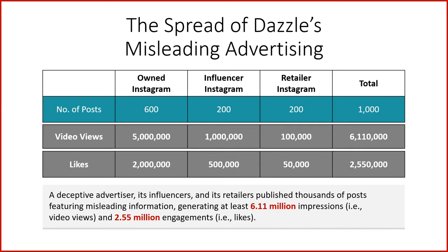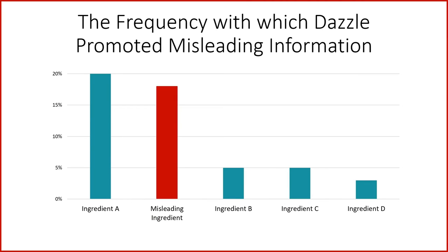Based on this analysis of Dazzle's activity on Instagram, we know that it promoted the misleading ingredient in thousands of posts, and that these posts were seen by millions of people and received millions of likes. We can add more context here. In addition to looking at the absolute number of posts, we analyzed the frequency with which the additional ingredient was mentioned compared to four other ingredients in Dazzle's product. The misleading ingredient, highlighted in red, was promoted in 18% of all of Dazzle's posts, which was much higher than three of the four other ingredients.